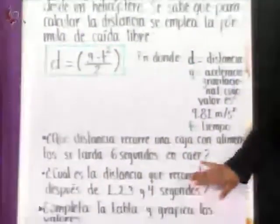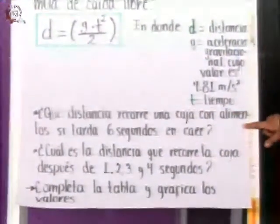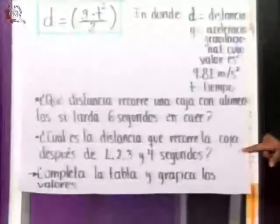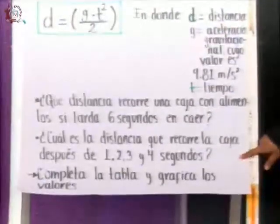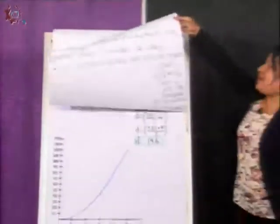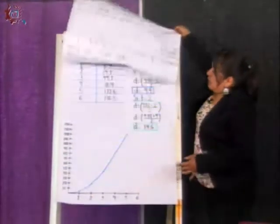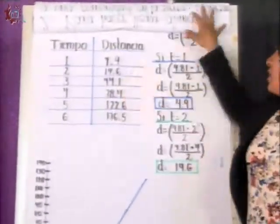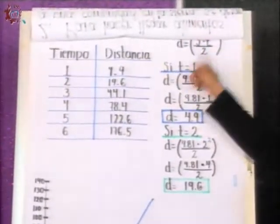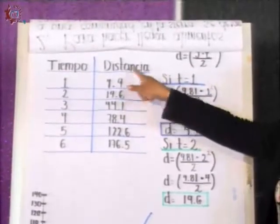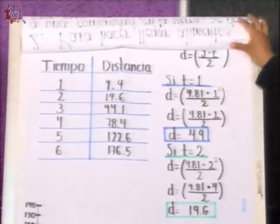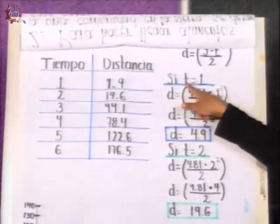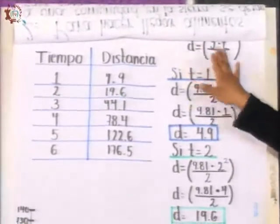Here we will ask ourselves two questions. What distance does a box with food travel if it takes 6 seconds to fall? And the second question, what is the distance the box travels after 1, 2, 3, and 4 seconds? If we notice, in this case they are already giving us the values of time, where time will be our variable x. In this case, we will use the free fall formula to calculate the distance. Remember that our formula is d equal to g times t al cuadrado entre 2. We will substitute the values. Here we have the time and the distance is what will result.